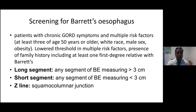For screening of Barrett's, patients with chronic gastroesophageal reflux disease symptoms and multiple risk factors — at least three of: age 50 years or older, white race, male sex, obesity — should be considered. The threshold should be lowered in the presence of family history, which includes at least one first-degree relative with Barrett's.